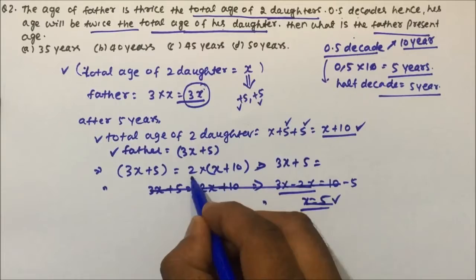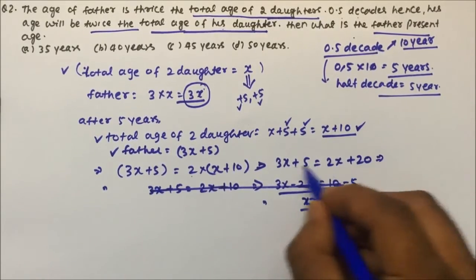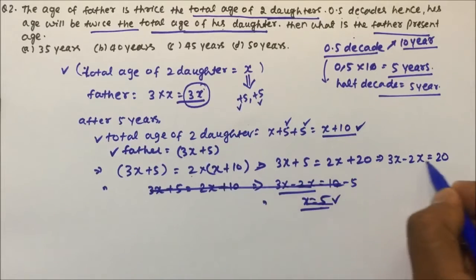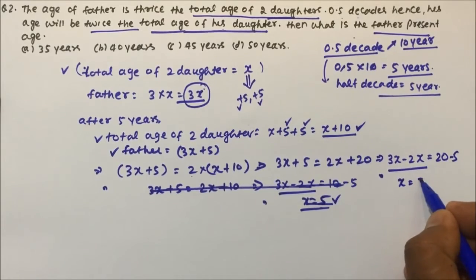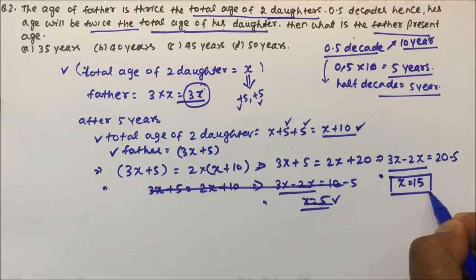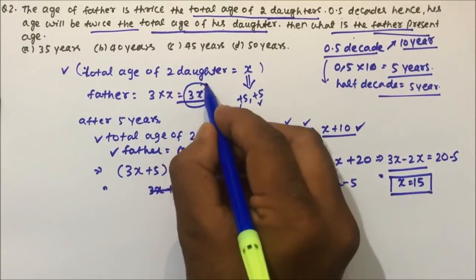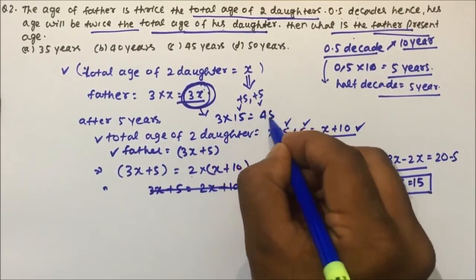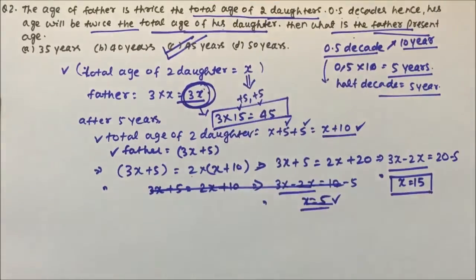So the equation is: 3x + 5 = 2(x + 10), which gives 3x + 5 = 2x + 20. Bringing 2x to the left side: 3x minus 2x equals 20 minus 5, so x equals 15. The present age of father is 3x, and since x is 15, that is 3 into 15 which equals 45. So the present age of the father is 45 years old, which is option C. Option C is the correct answer for question number 2.